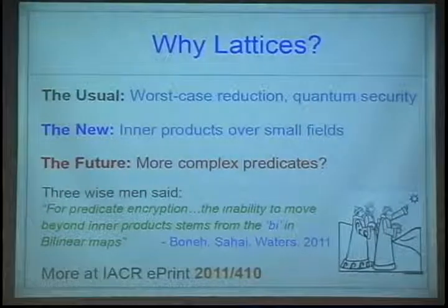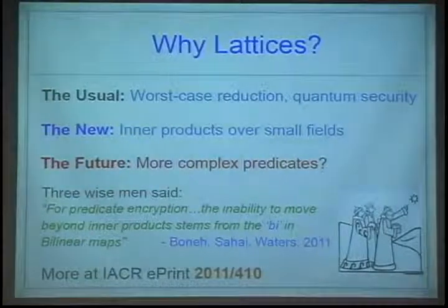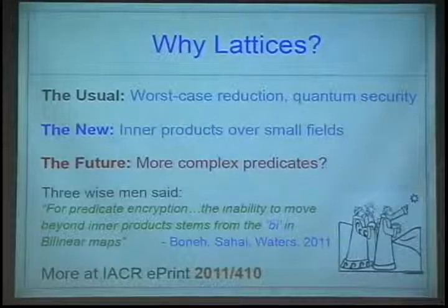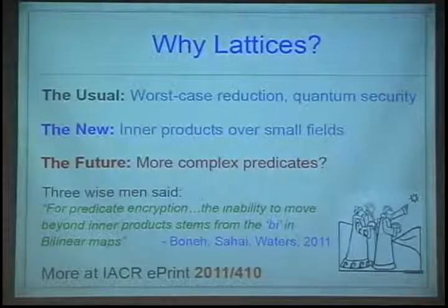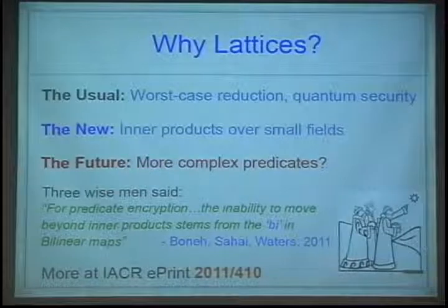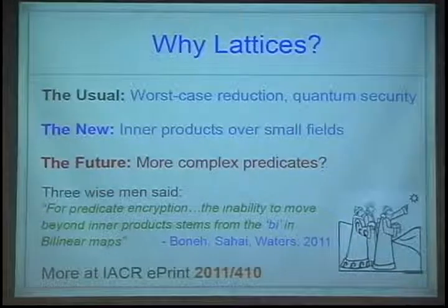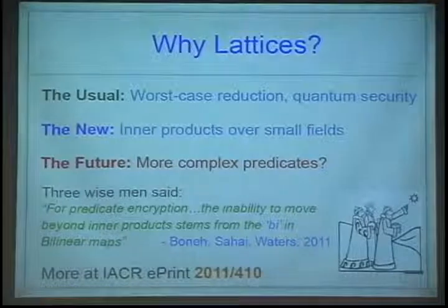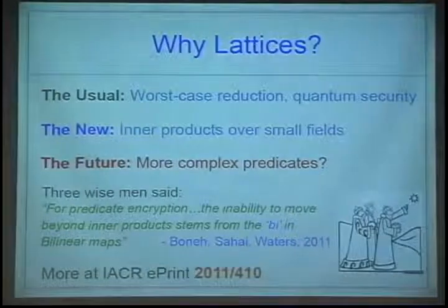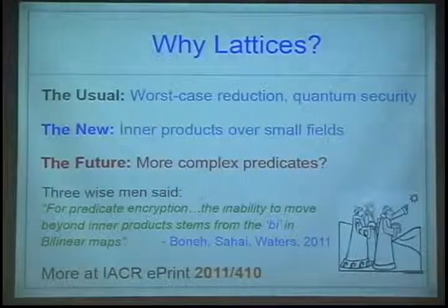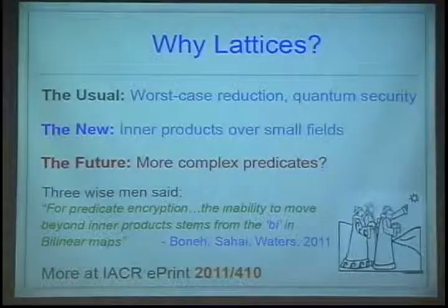As you can see here, we have three wise men amongst our midst who said that for predicate encryption, the inability to move beyond inner products stems from the 'bi' in bilinear maps. That was Boneh, Sahai, and Waters, and we have every reason to trust their wise words. So we expect to handle more complex predicates going forward. Thank you.